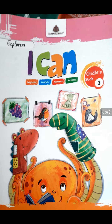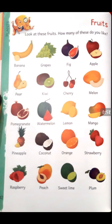Students, before we start our session, firstly open your book — Book number 3, Oodles book, at page number 42: Fruits.